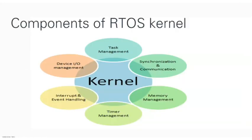Let us see the various components of the RTOS kernel. The kernel is the heart and core of an operating system — all important functions are stored in this portion. The components present in the RTOS kernel include: task management, synchronization and communication mechanisms, memory management, timer management, and interrupt and event handling device I/O management.